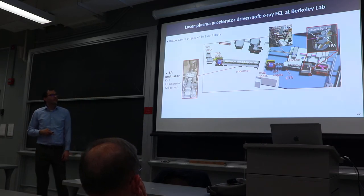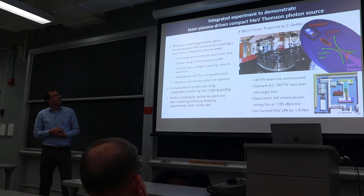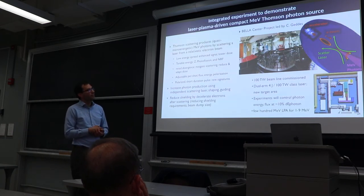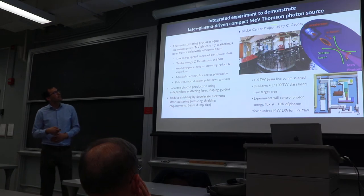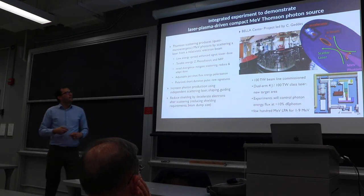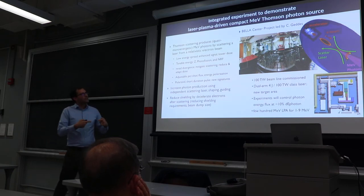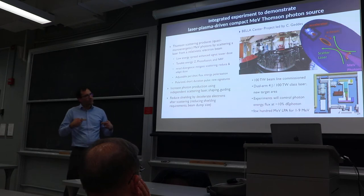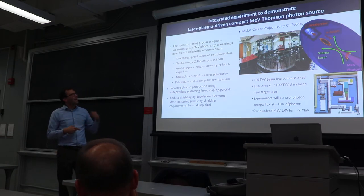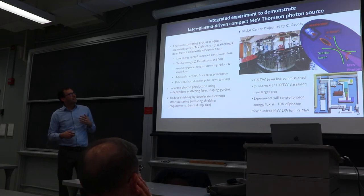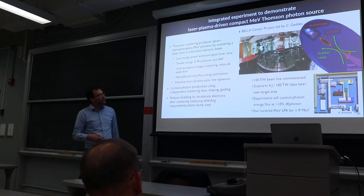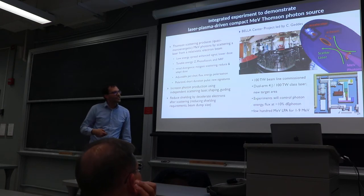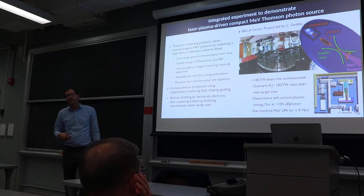Our other radiation source development project is the laser plasma driven compact MeV photon source using Thompson scattering. This has two independent arms—one arm of laser pulse generates the electron beam and the second arm is the scattering laser. With a few hundred MeV electrons you can generate about 1 to 9 MeV photons.